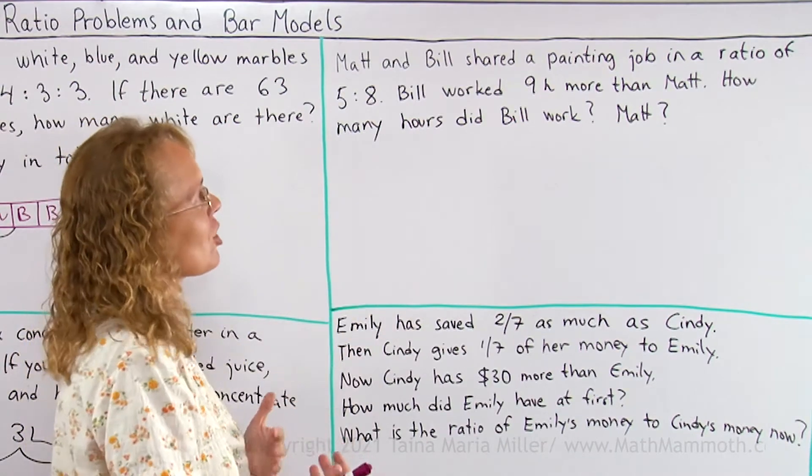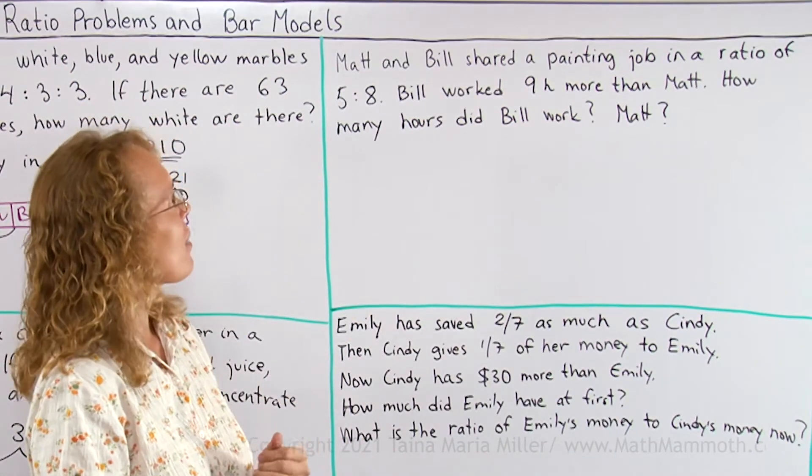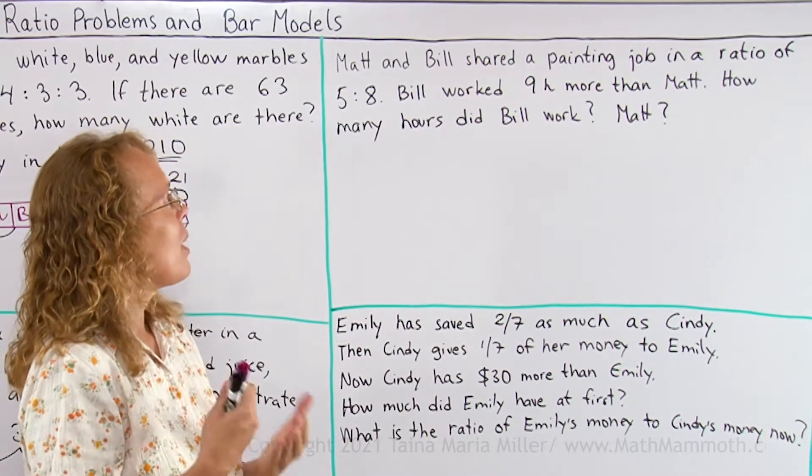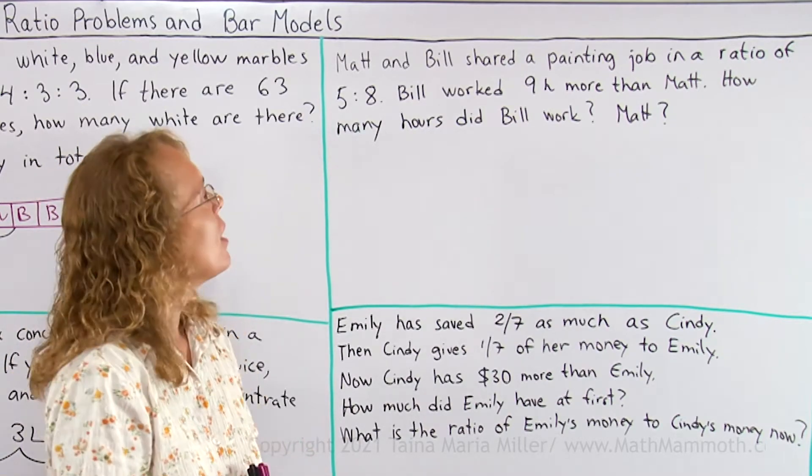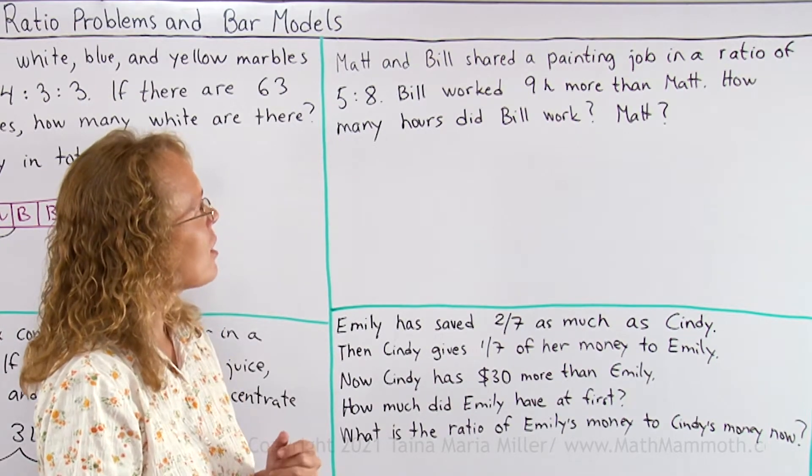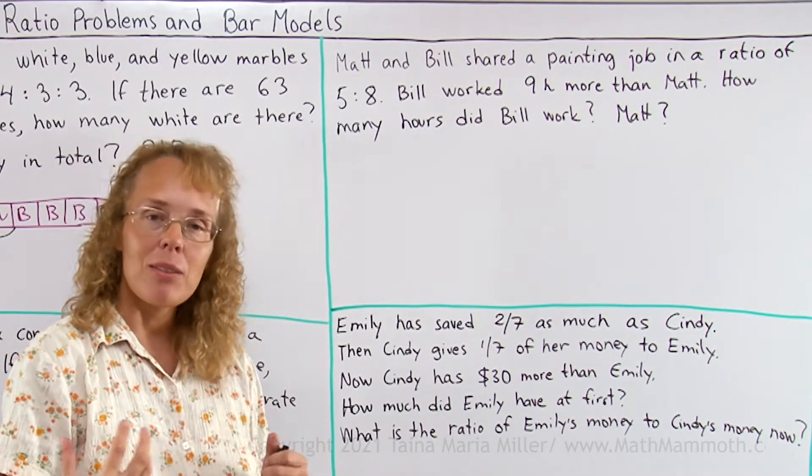Matt and Bill shared a painting job in a ratio of 5 to 8. It means Matt did 5 parts, Bill did 8 parts. And Bill worked 9 hours more than Matt. How many hours did Bill work? And how many hours did Matt work?